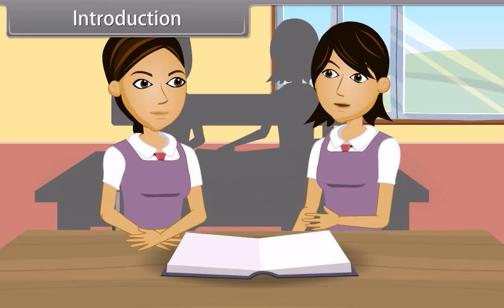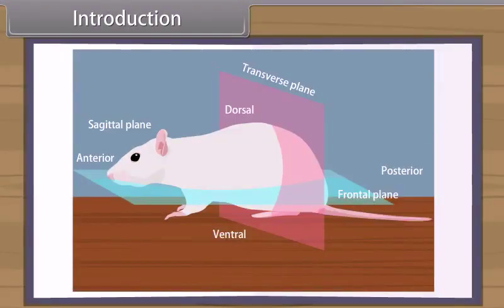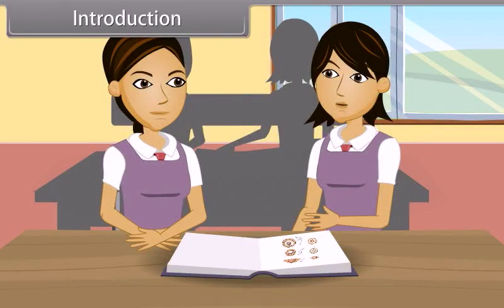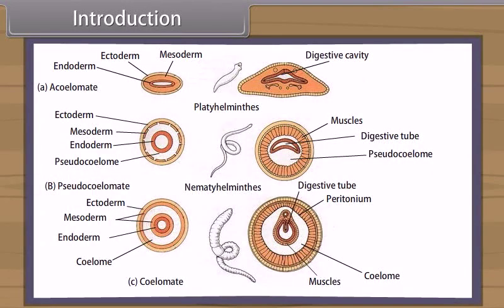According to symmetry, animals are either radially symmetrical, e.g. sponges, coelenterates, and echinoderms, or bilaterally symmetrical, e.g. nematodes, arthropods, annelids, and vertebrates, and some are asymmetrical, e.g. snails. On the basis of body cavity, the animals are either acoelomates, e.g. coelenterates and flatworms, or pseudocoelomates, e.g. nematodes.